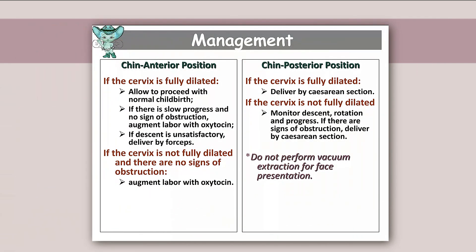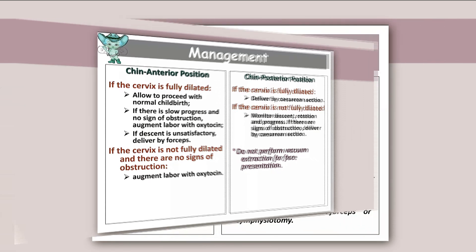Management of chin anterior position: if the cervix is fully dilated, allow to proceed with normal childbirth; if there is slow progress and no sign of obstruction, augment labor with oxytocin; if descent is unsatisfactory, deliver by forceps. If the cervix is not fully dilated and there are no signs of obstruction, augment labor with oxytocin. In chin posterior position: if the cervix is fully dilated, deliver by cesarean section only; if not fully dilated, monitor descent, rotation, and progress; if there are signs of obstruction, deliver by cesarean section. Do not perform vacuum extraction for face presentation.